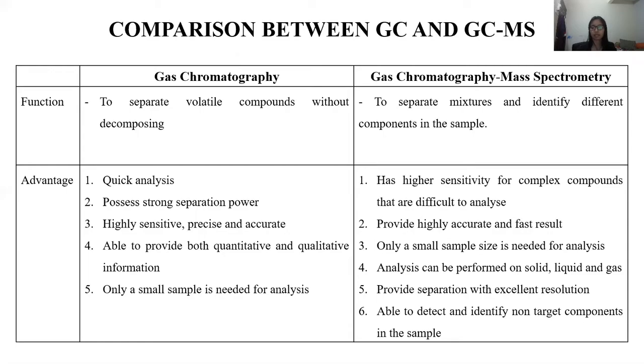Actually, GC itself has a detector, its own detector. But when it's coupled with mass spectrometry, it's more efficient and it can even identify the components in the sample as compared to GC alone.